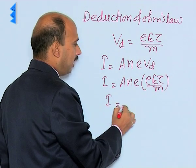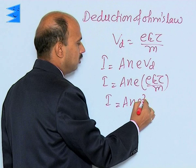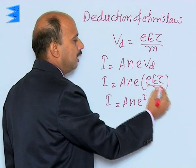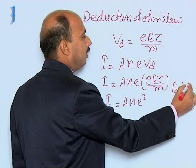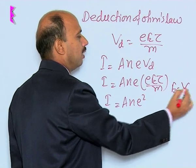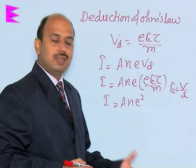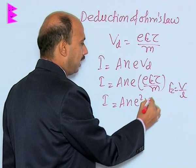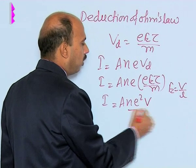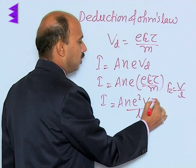So we can write I is equal to A n e squared, and in place of E we can also write V upon L, where V is the potential difference and L is the length of the conductor. So we can write: V upon L m into τ.